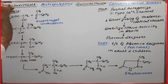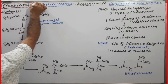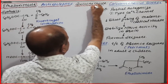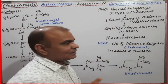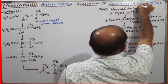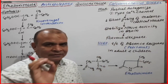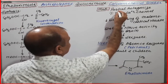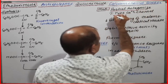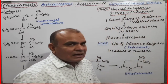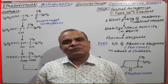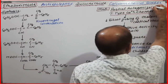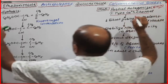Ethosuximide belongs to anti-epileptic drugs, under the subcategory succinamide. Therapeutically, it is a calcium channel blocker — it blocks calcium channels. Specifically, it partially antagonizes T-type calcium channels. Antagonize means blockage, so ethosuximide blocks T-type calcium channels.